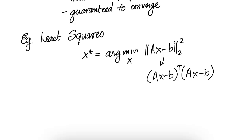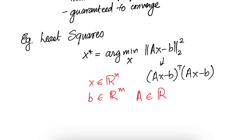Here x is in R^n and b is in R^m, so therefore A is a matrix in R^(m cross n). This notation means it is a matrix whose entries are real and it is of size m cross n.